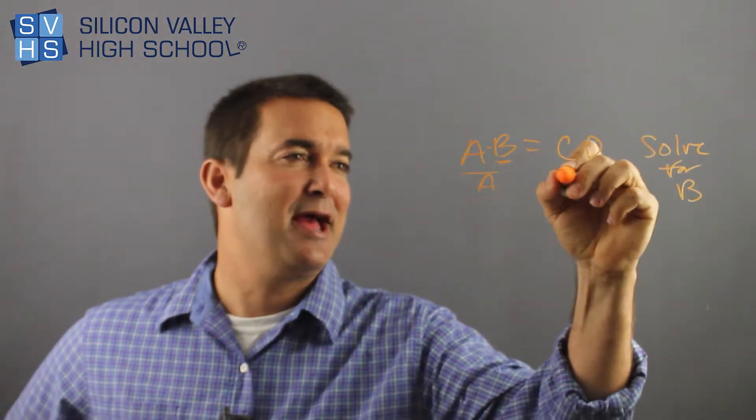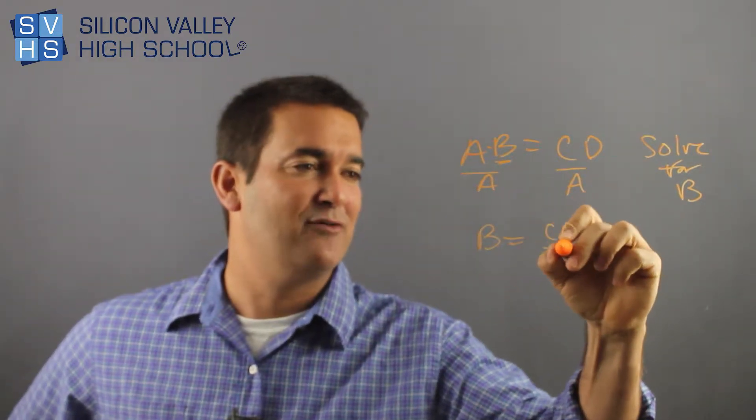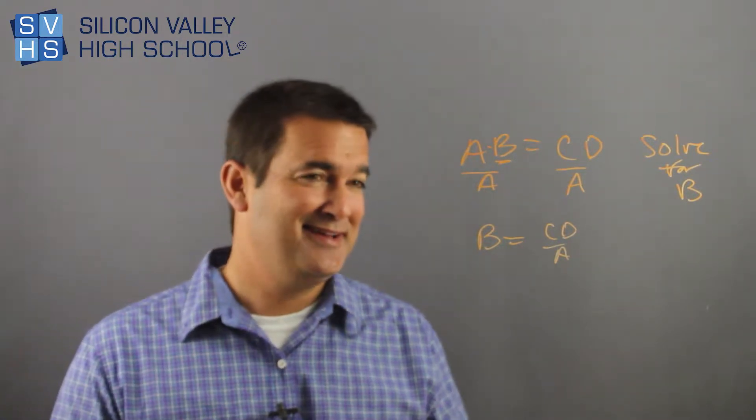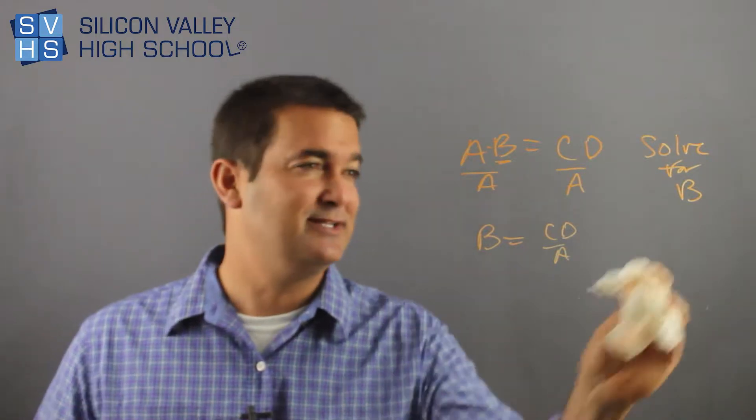You divide both sides by A, and this literal equation would be B equals CD over A, and it's totally done. So they are easy. They're weird at first, but if you know your little laws of algebra, they're pretty easy.